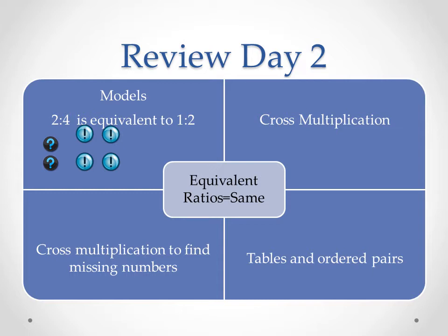The first way is to use a model. Here we have two question marks before exclamation points — two to four is equivalent to one question mark for every two exclamation points. We can use cross multiplication, and if the cross products are equal, that means the ratios are equivalent. We can also use cross multiplication to find missing numbers, and we can use tables and ordered pairs. If you graph ordered pairs, the x-to-y ratio is equivalent if they form linear or straight lines.